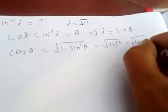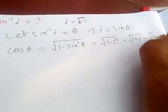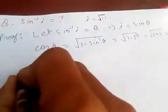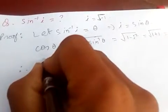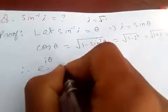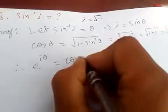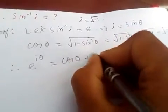So minus and plus gives root 2. Now e to the i theta is cos theta plus i sine theta.